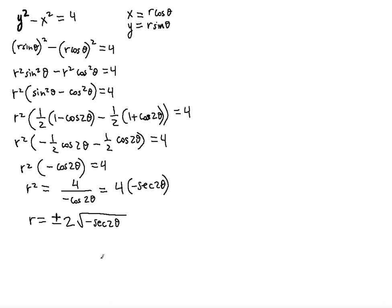We must ensure that negative secant 2 theta is greater than zero. That means secant 2 theta must be less than zero — because multiplying by negative 1 flips the inequality. Since secant follows the same sign patterns as cosine, we need cosine 2 theta to be negative, which occurs in quadrants 2 and 3.